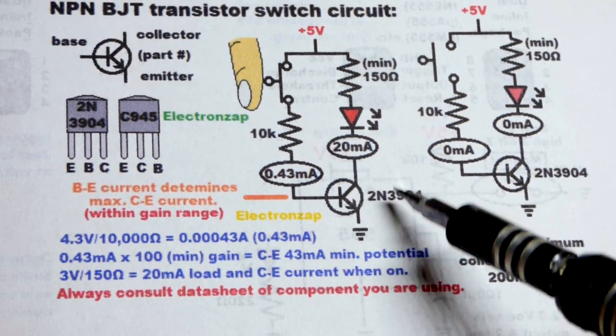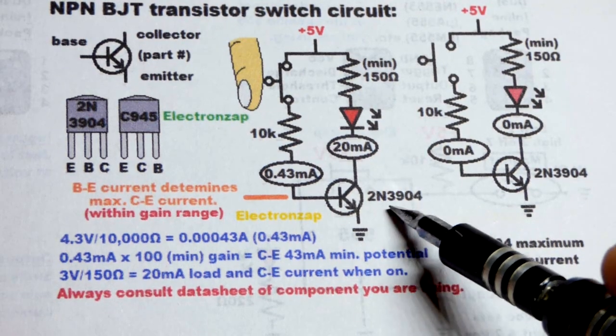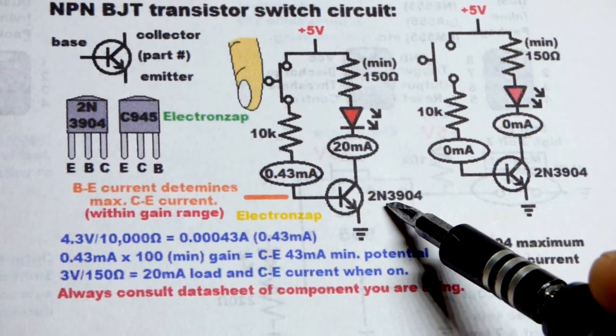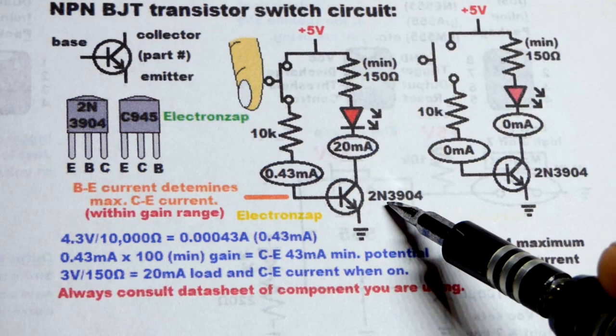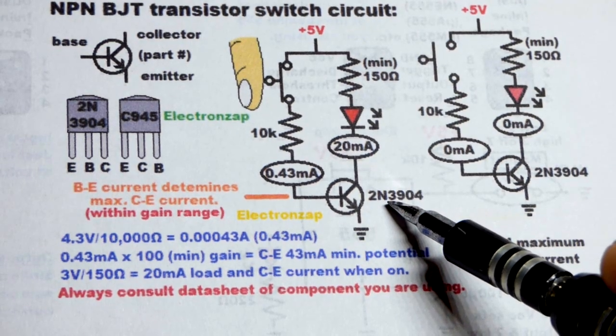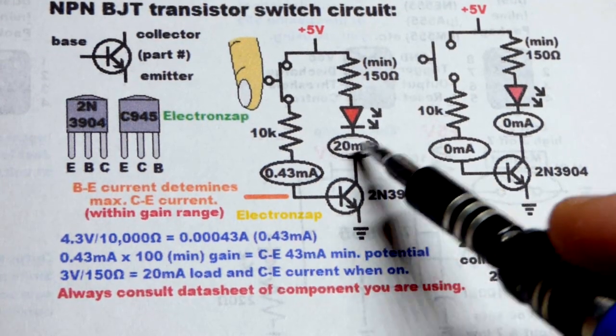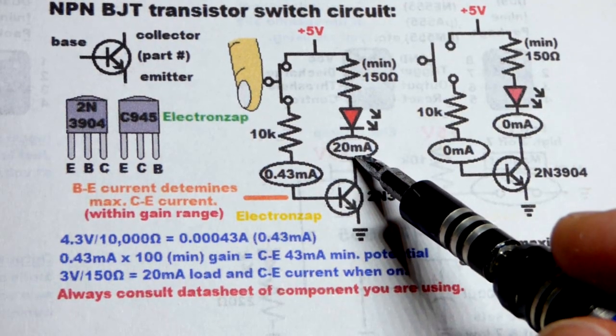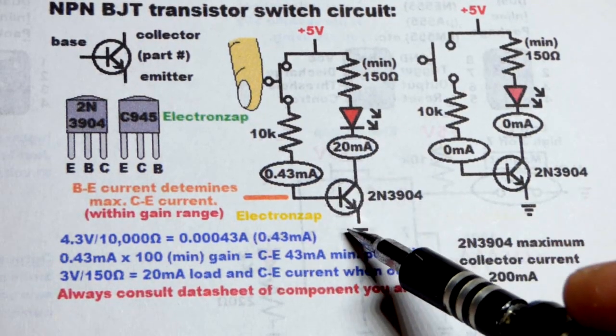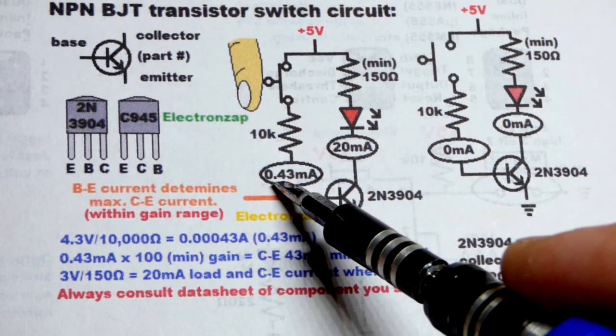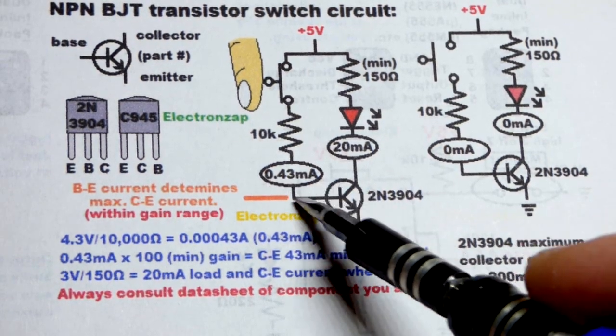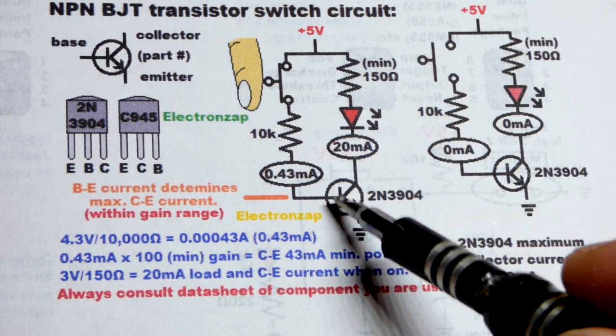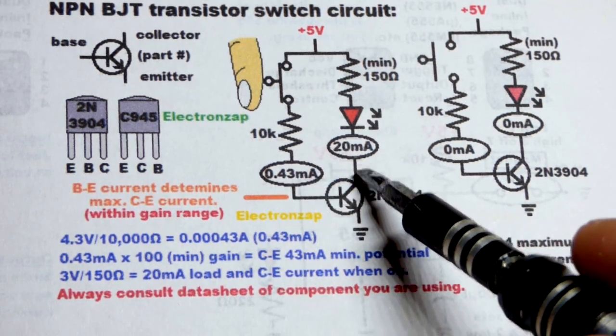Whatever current is going from base to emitter, it's going to let many multiples go through. Now, it's not exact. The 2N3904, I think can be anywhere between 100 times, 100 gain to 300 times, 300 gain.